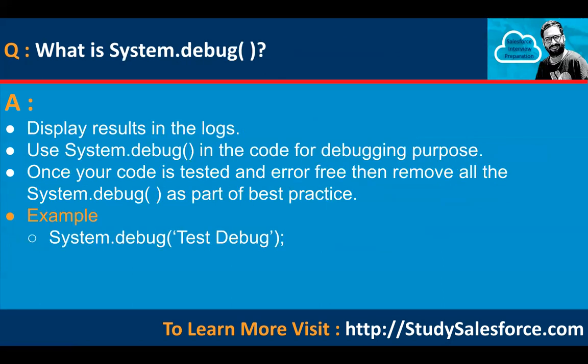What is system.debug? It displays results in the log. Use system.debug in your code for debugging purposes. Once your code is tested and error-free, remove all system.debug statements as part of best practice. Whatever you write in system.debug will be available in the logs, and it is commonly used for debugging purposes.